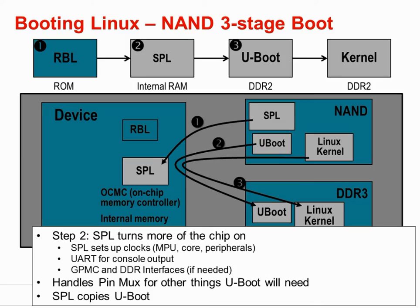Once the SPL has been successfully loaded into the internal memory of the device, it begins executing. The SPL will begin by programming the internal clock tree of the device. Recall that the ROM bootloader also sets default values for the clocking structure, but since it is factory programmed, its values cannot be changed and are chosen to be conservative. The SPL is software, so this stage provides an opportunity to specify the clocking to exactly the value desired. The SPL will also configure the pin multiplexer of the device, configure the UART as a console, and initialize any peripherals or memory interfaces that it has been configured to support. After this configuration is complete, the SPL will copy uBoot from the NAND flash into the external memory.